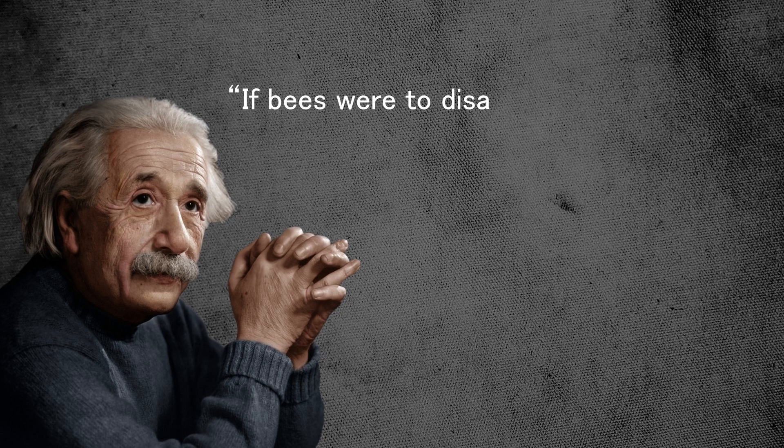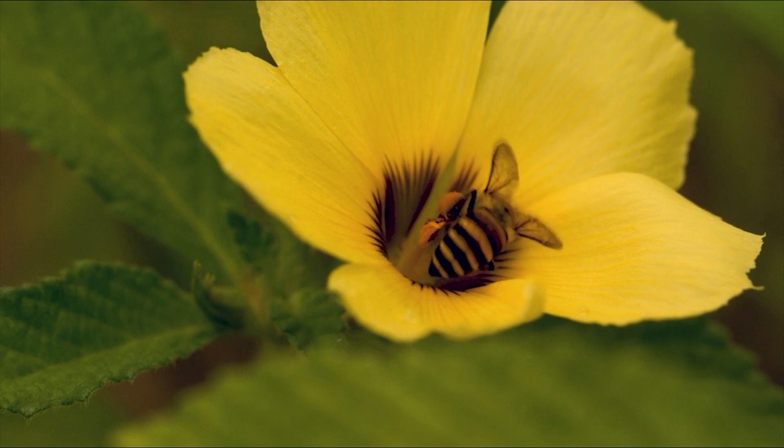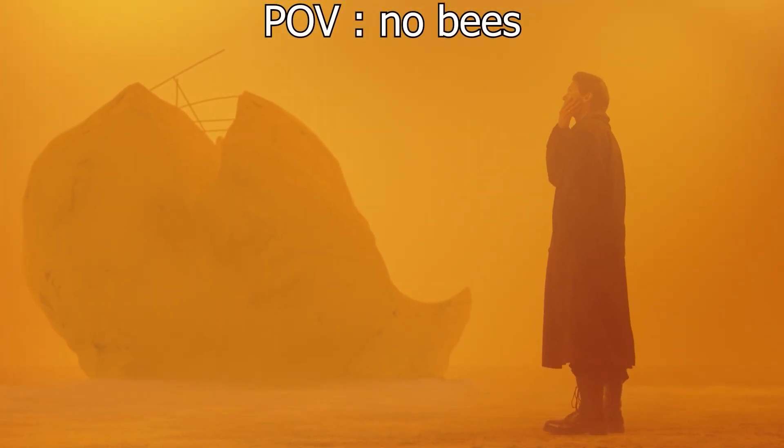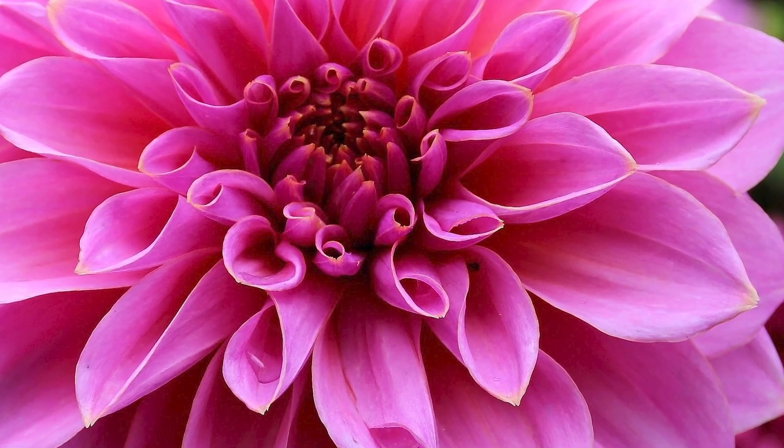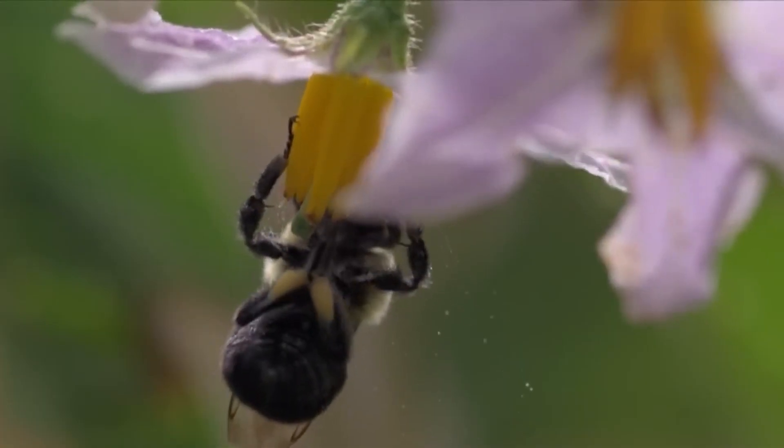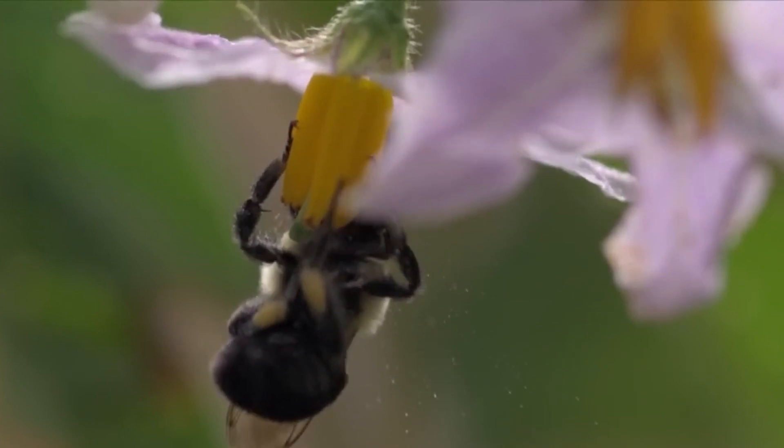There is a popular quote, frequently attributed to Albert Einstein, that goes: if bees were to disappear from Earth, we would have less than four years to live. While this might not be exactly accurate, the fact remains that humankind would suffer greatly if bees were to go extinct. Why? Pollination.